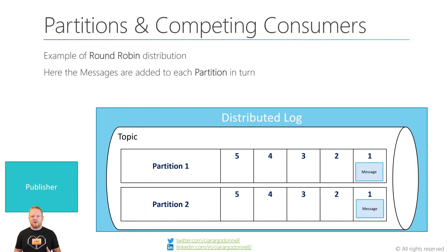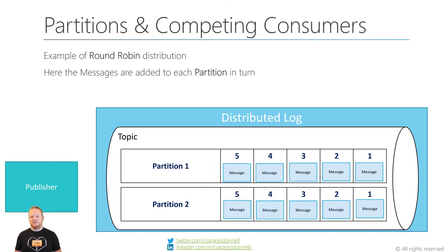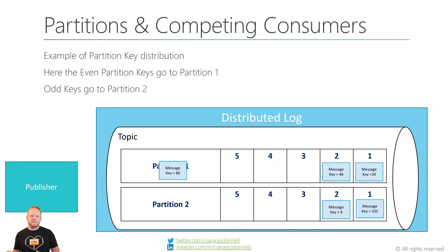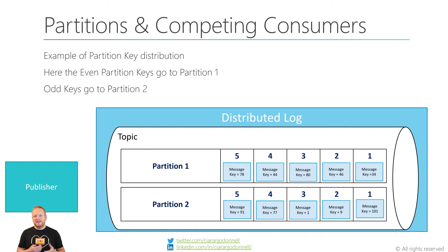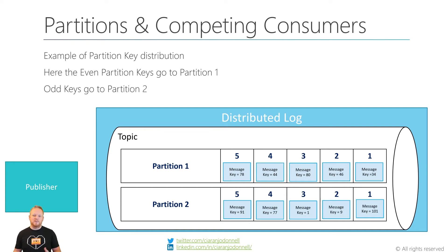Here is an example of round robin: messages just go into partition one, then two, then one, then two, and so on through all messages received. The other option is to have some kind of partition key. In this example, we might say that all even partition keys go to the first partition and the odd ones go to the second partition. This is normally done through a hashing algorithm on the partition key that you provide when you send a message. What it effectively means is that it's deterministic — a particular message with a particular key will always go into the same partition. We use this when we want to send all messages about a particular customer or order to the same partition.